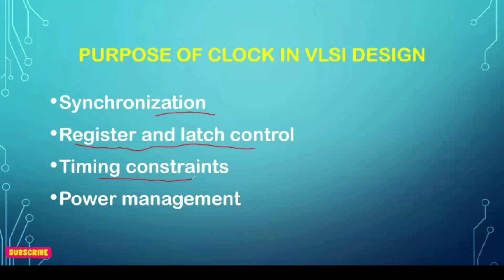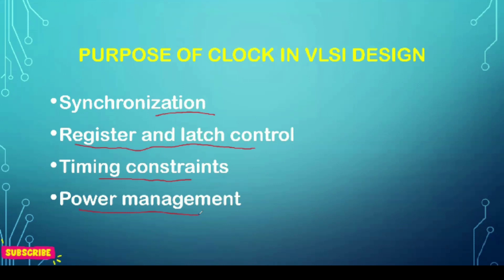The third purpose is timing constraints. The clock signal is used to define timing constraints for various parts in the IC, ensuring that the signal arrives within a specific time window. We have certain windows in timing constraints like setup time and hold time, so we need a clock for that. Next is power management — clock gating is employed to dynamically control the clock signal to reduce power consumption. When certain circuits are idle, we don't pass the clock to them, saving power using the clock gating technique.